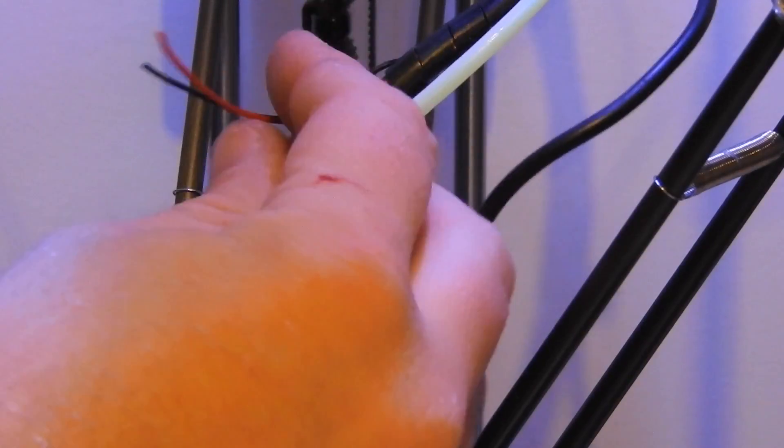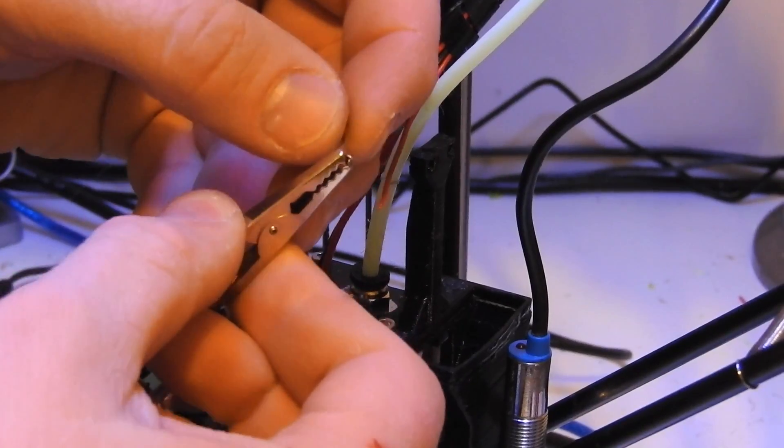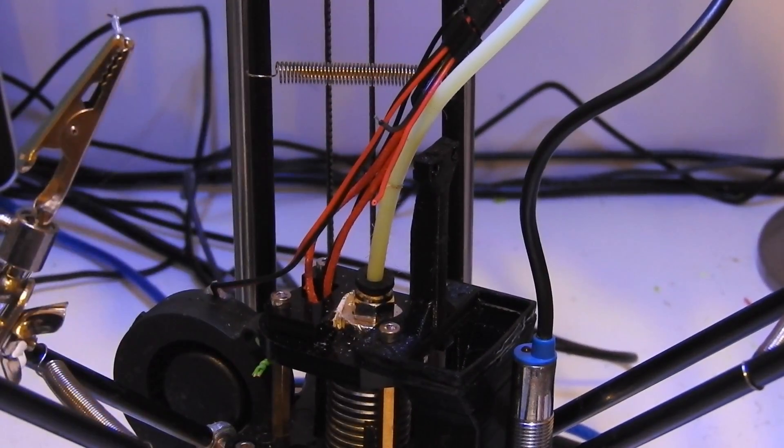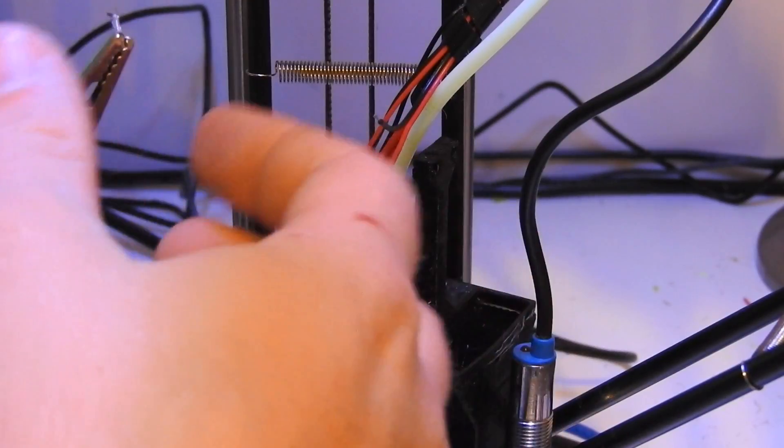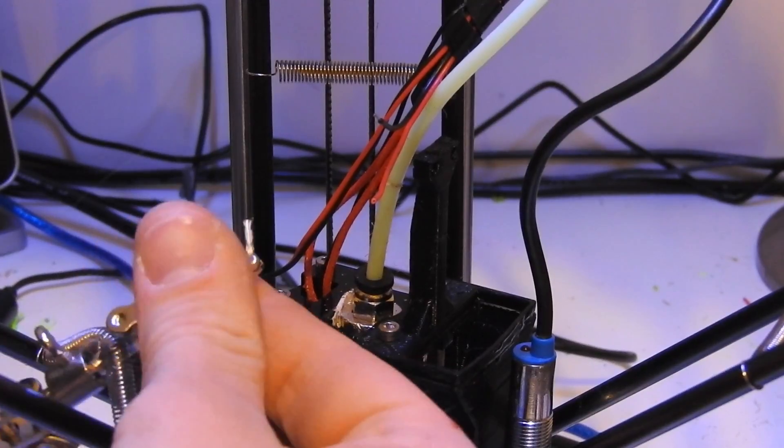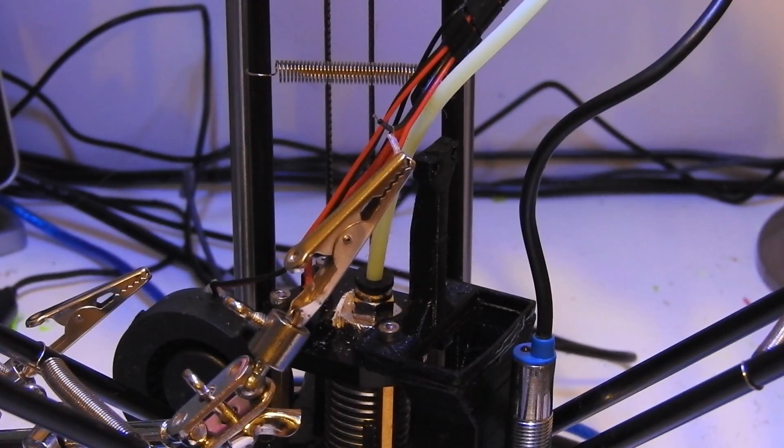Okay so again you just want to strip back these two wires here that we cut before, exposing about 10 mil of the wire. Hopefully you can see what I'm doing. Obviously this is very tiny stuff I'm working with here, but I'm doing my best to show you how to do it. Just heat my soldering iron up again.